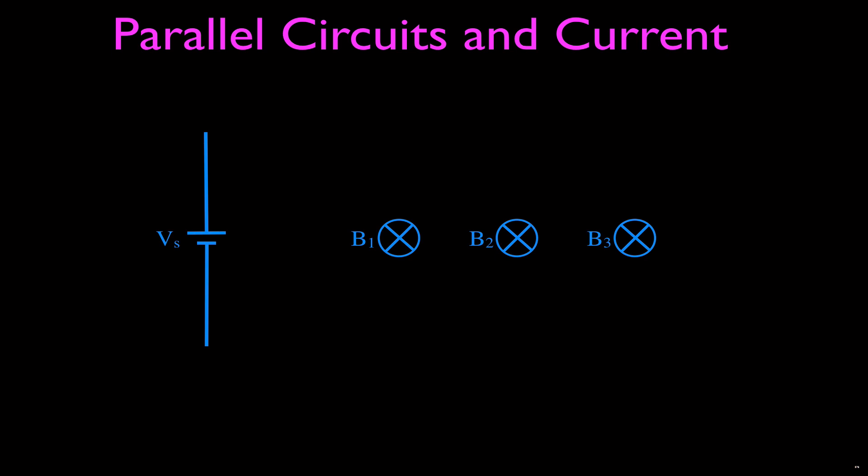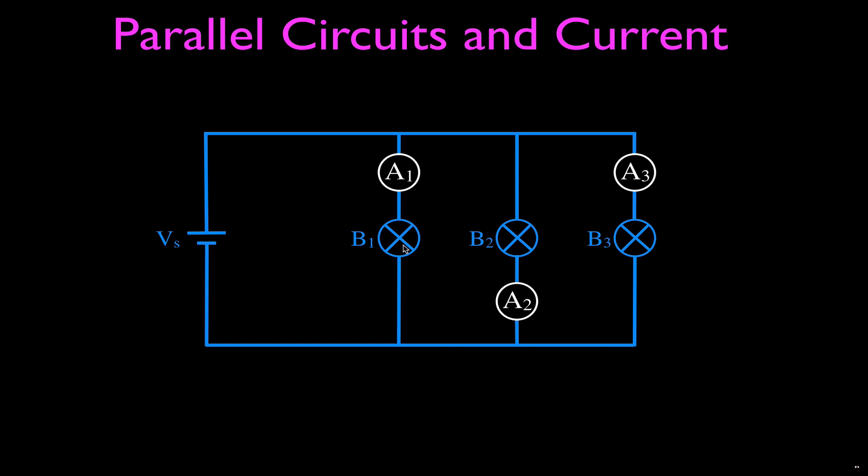And then we want to have an ammeter in line with each of those to measure the current through each branch. So we're just going to connect them once again with straight lines and right angles. And we're going to put one through each one like that. We have three different branches.